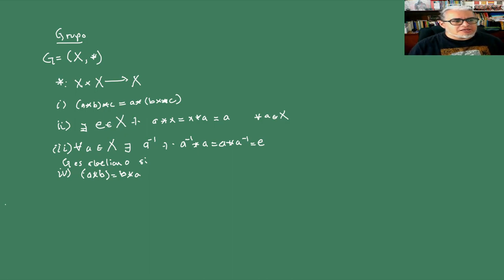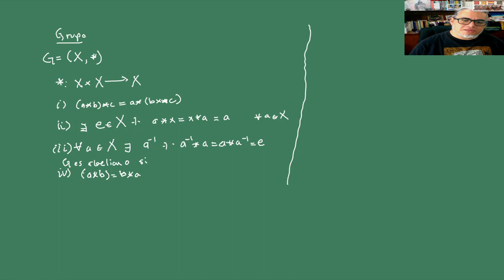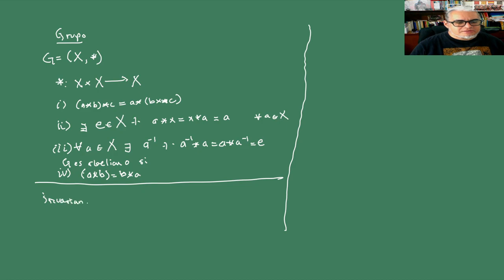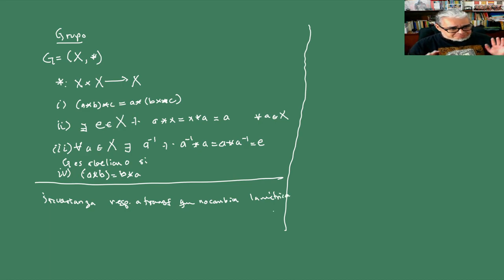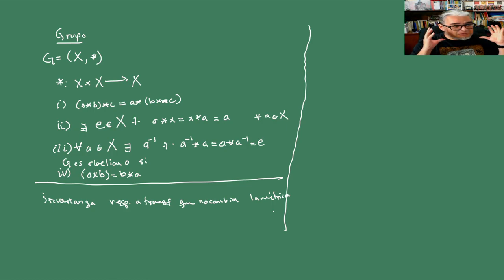Podemos ir construyendo distintos grupos —lo vamos a hacer en la siguiente sesión. Lo que estábamos haciendo al principio era pensar la invarianza respecto a transformaciones que no cambian la métrica —en particular la métrica euclidiana, aunque podría ser cualquier métrica. A eso le vamos a llamar isometrías, y esa es la idea que tenemos fija de simetría.